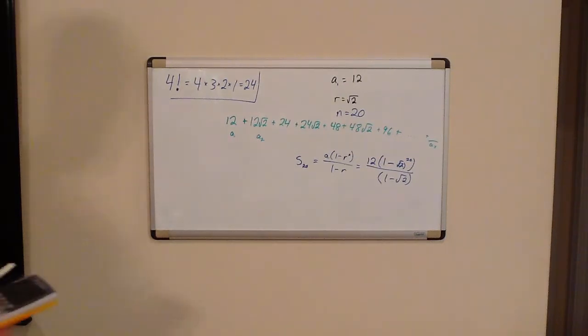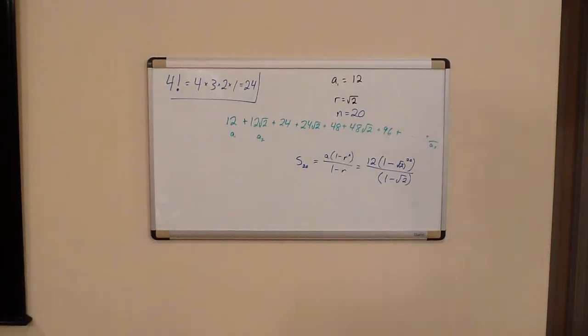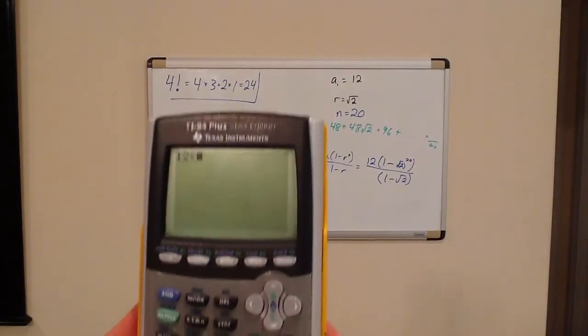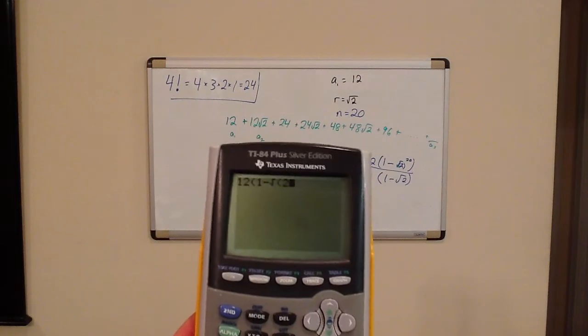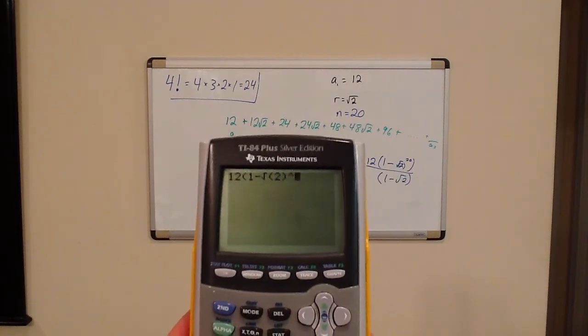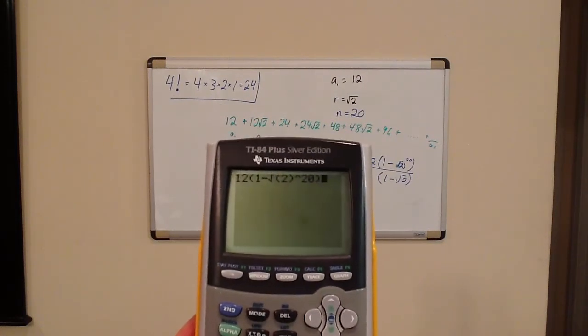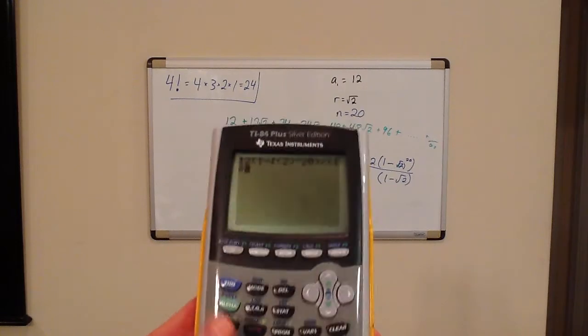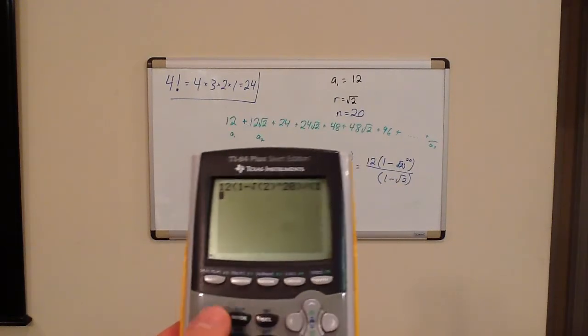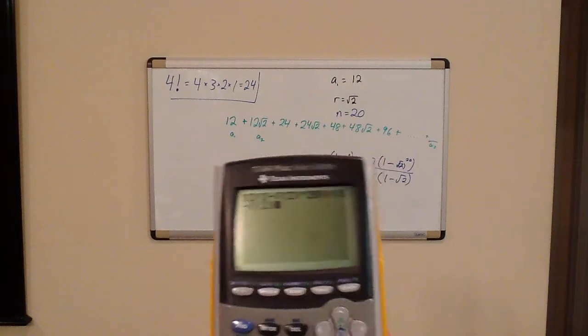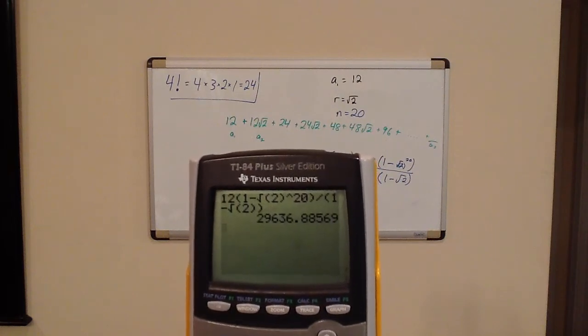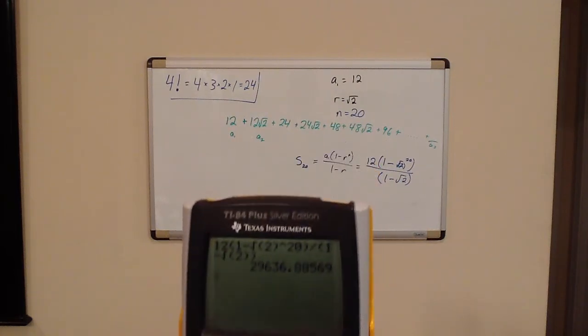Because there's so much room for calculator error, I am going to type this one in and make sure that you can follow along with me on this. So here we go. If I can get the glare off the screen. 12 and then 1 minus the square root of 2, close the parenthesis, raise it to the 20th power. That finishes the numerator. Divided by a denominator, 1 minus the square root of 2. There, I'll hold it still for just a second so you can see it. There we go. I believe that should answer your question.